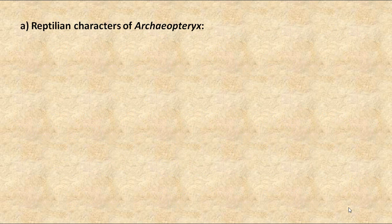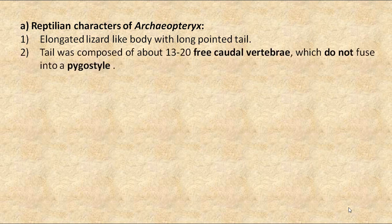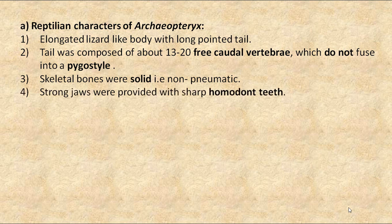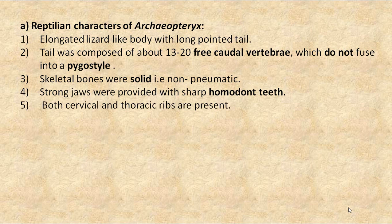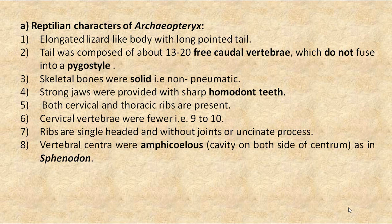Now let us see the reptilian characters shown by Archaeopteryx. It had an elongated lizard-like body with a long pointed tail composed of about 13 to 20 free caudal vertebrae, which do not fuse into a pygostyle. The skeleton bones were solid, i.e., non-pneumatic. Strong jaws were provided with sharp homodont teeth. Both cervical and thoracic ribs are present. Cervical vertebrae were fewer, i.e., 9 to 10. Ribs are single-headed and without joints or uncinate processes. Vertebral centra were amphicoelous, having a cavity on both sides of the centrum, as in Sphenodon.